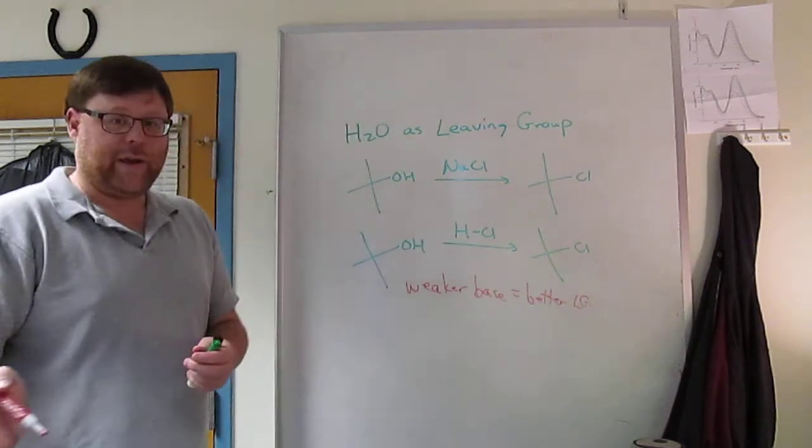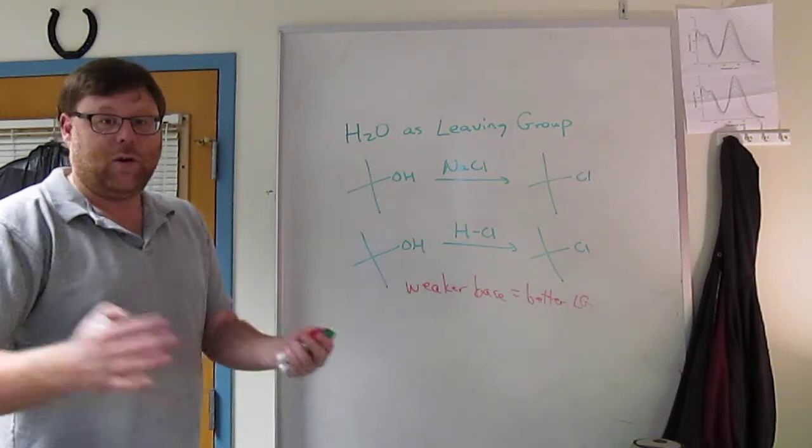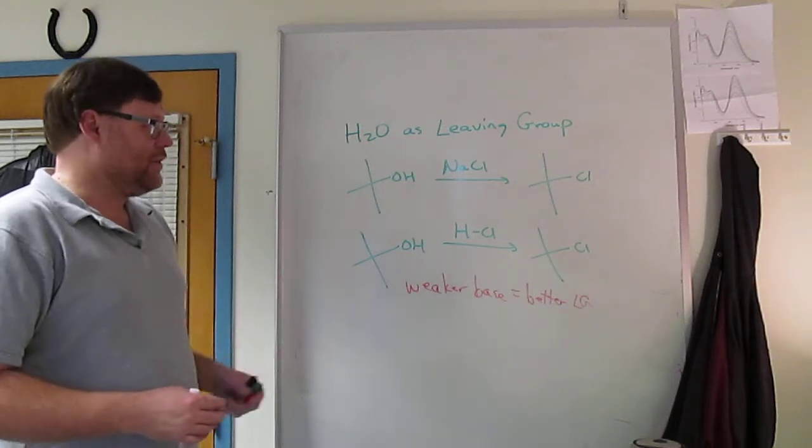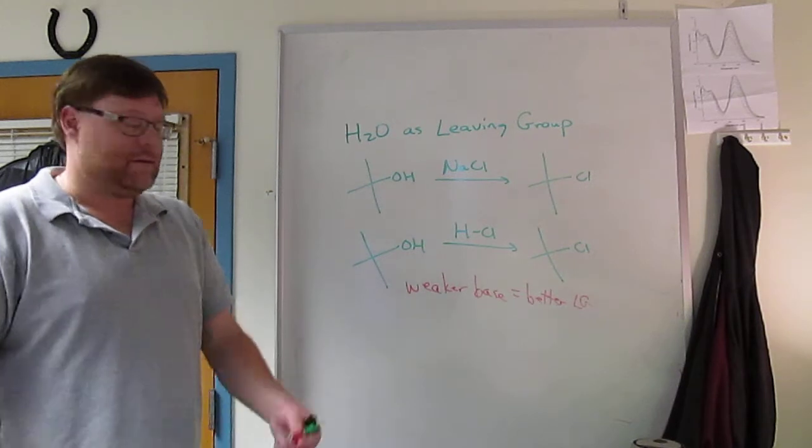So hydroxide is a strong base. If hydroxide leaves, you're making a strong base. Treat it like an acid-base reaction. You don't want to make strong bases and acids in acid-base reactions. So this is just a Lewis acid-base reaction. If the reaction makes a strong base, it's probably not going to go forward.